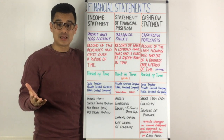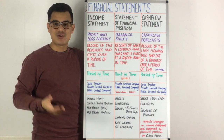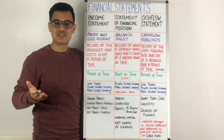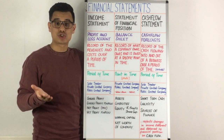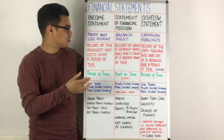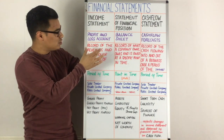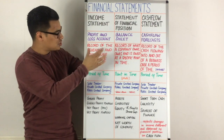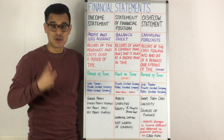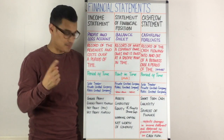We start with the income statement. The income statement is sometimes referred to as the profit and loss account, because at the end of the year it will show you if you've made a profit or a loss. To define it, it's a record of revenues and costs over a period of time — note that period of time, usually one year.